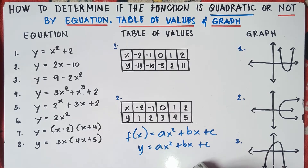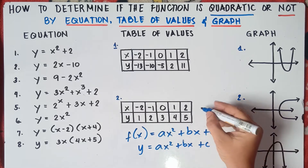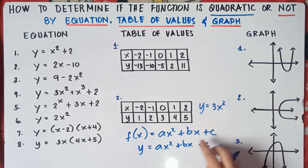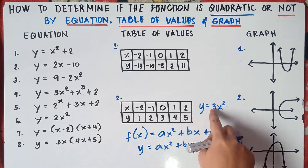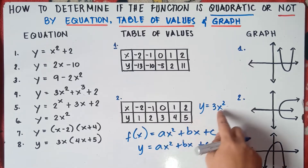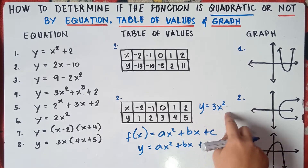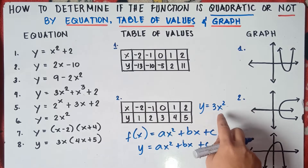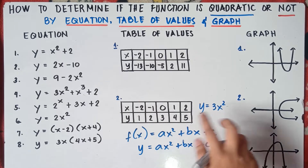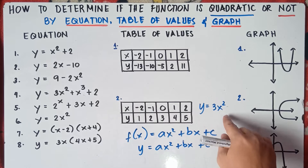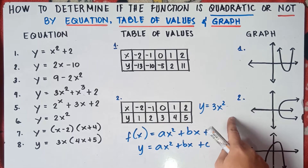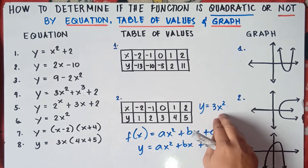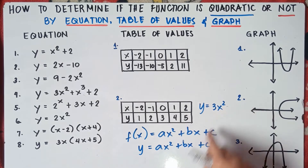Just in case you don't have the value of b and c — for example, y = 3x² — you don't have the value of b. Here, 3 is our a. Since we have an exponent of 2, therefore this equation is a quadratic function. If you don't have the value of b and c, then b and c in this function are 0. This is a quadratic function since the degree is 2.